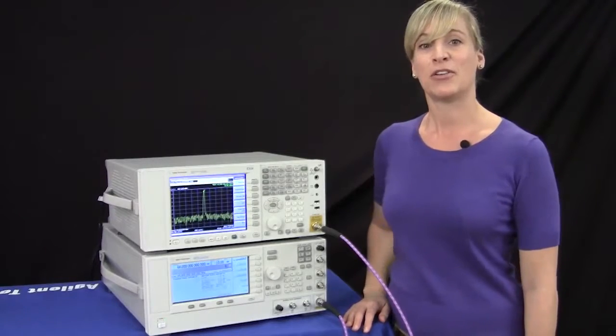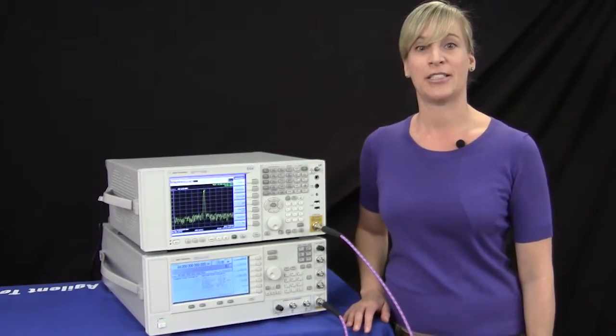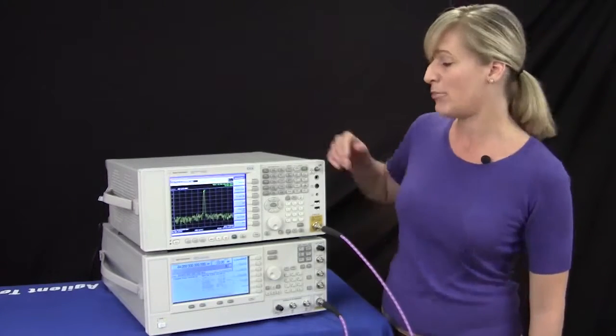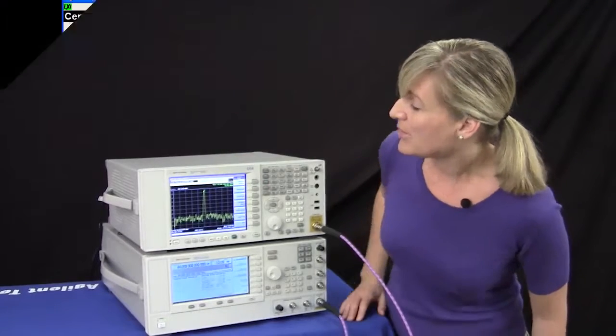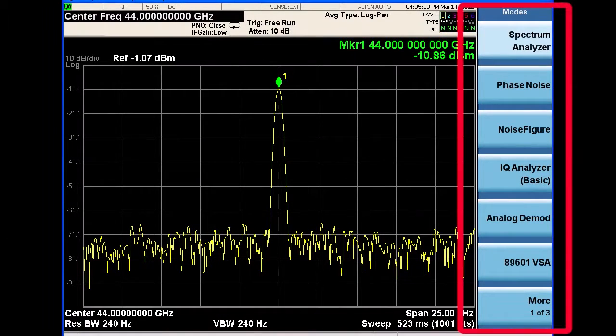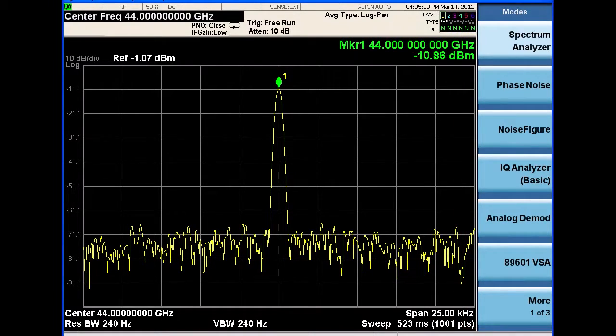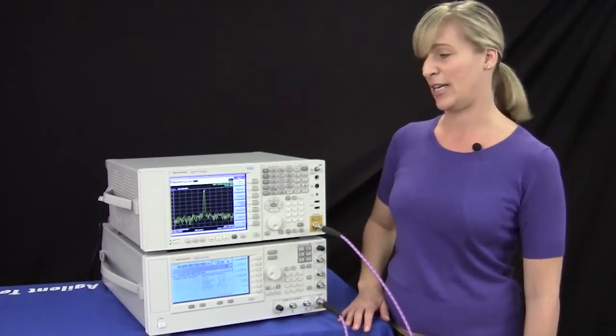Agilent also offers over 20 advanced measurement applications that can be added to the EXA and these are located under the mode key. Some of these measurements include phase noise, noise figure, analog DMOD, and Agilent's powerful VSA 89600 software. Let's take a look at our phase noise application.